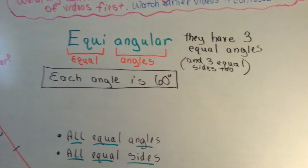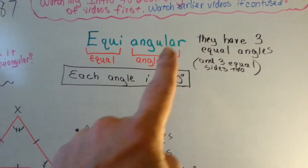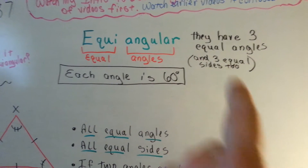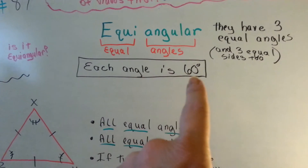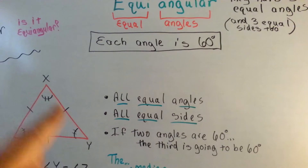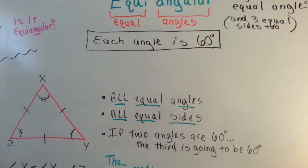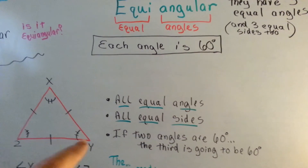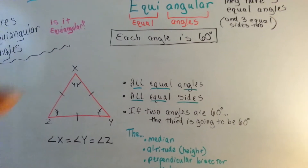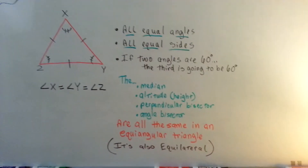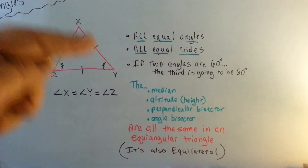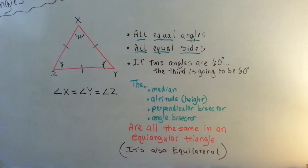This is going to be a quick, easy video. Equiangular means equal angles. They have three equal angles and three equal sides, too. Each angle is 60 degrees. Because the interior of every triangle is 180 degrees, and each angle is equal, you have to split the 180 degrees equally into 60, 60, and 60. So all equal angles, all equal sides. If two angles are 60, the third is going to be 60.